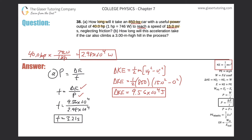Now let's look at letter b: how long will this acceleration take if the car also climbs a three-meter high hill in the process? Think through what changes. The power hasn't changed — the car still produces 2.98 × 10⁴ watts. We're still looking for a final speed of 15 m/s, so the kinetic energy stays the same. What changed is that it's also climbing a hill, which means we're changing its potential energy.